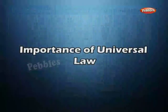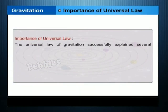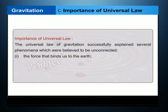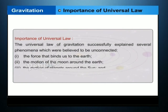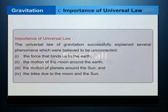Importance of the universal law: the universal law of gravitation successfully explained several phenomena which were believed to be unconnected — one, the force that binds us to the earth; two, the motion of the moon around the earth; three, the motion of planets around the sun; and four, the tides due to the moon and the sun.